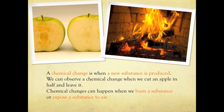A chemical change is when a new substance is produced. We can observe a chemical change when we cut an apple in half and leave it. Chemical changes can happen when we burn a substance or expose a substance to air.